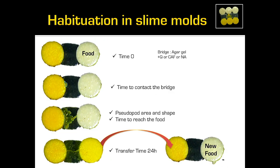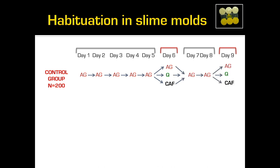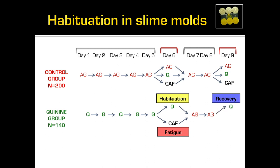We looked at the shape of the pseudopod when contacting the bridge and retested after 24 hours. The control bridge was plain agar for five days. On day nine, we tested with agar, quinine — a very bitter substance slime molds hate — and caffeine, another bitter substance they dislike. We had a resting period and then tested again. In the quinine group, slime molds crossed the bridge with quinine five days in a row, then were tested for habituation with quinine, for specificity with caffeine, and then for recovery.